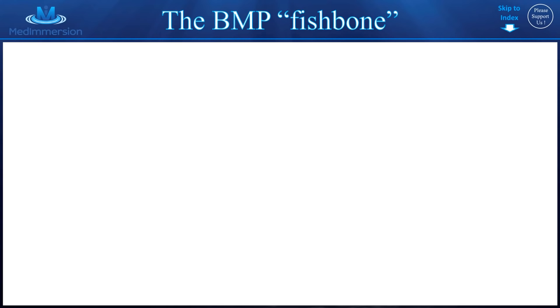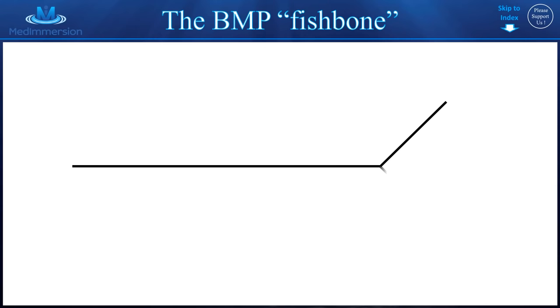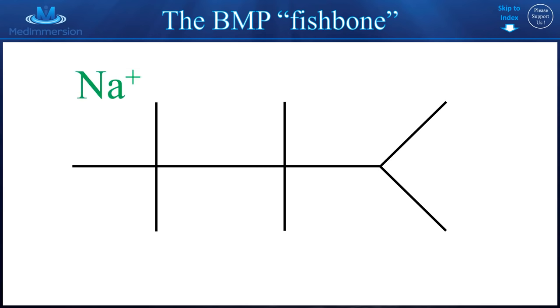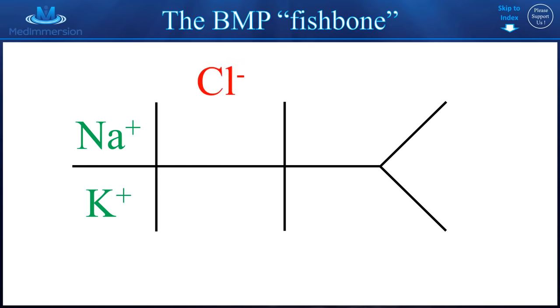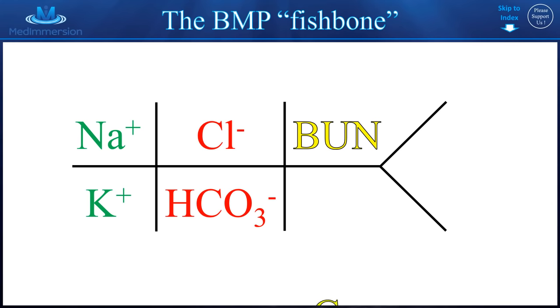Next up is the discussion of the fishbone. You draw out a BMP fishbone like so — basically it looks like a fish. Then you add the tests: sodium, potassium, chloride, bicarb, BUN, creatinine, and glucose.